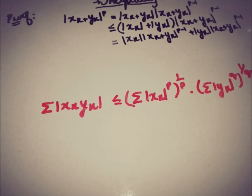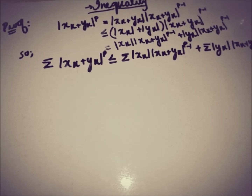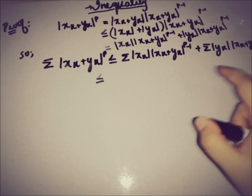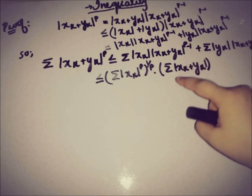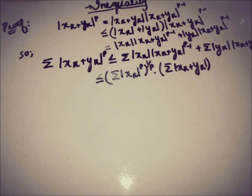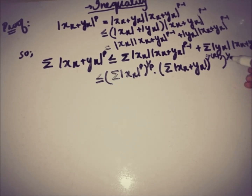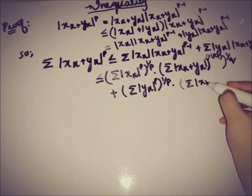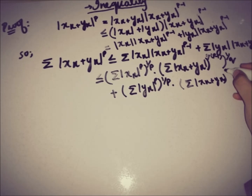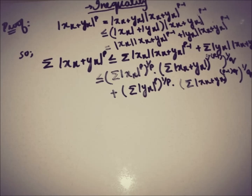Applying Hölder's inequality, this whole term is less than or equal to the sum of |xk|^P whole to the power 1/P, times the sum of |xk + yk|^((P−1)Q) whole to the power 1/Q, plus the sum of |yk|^P whole to the power 1/P, times the sum of |xk + yk|^((P−1)Q) whole to the power 1/Q.